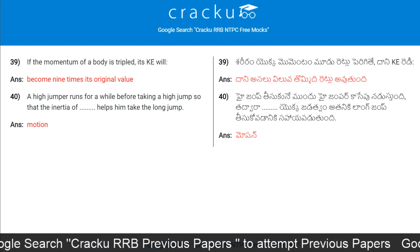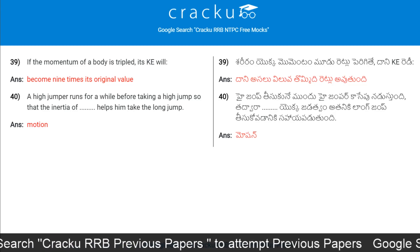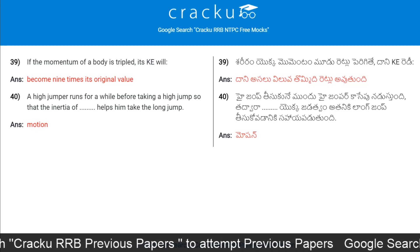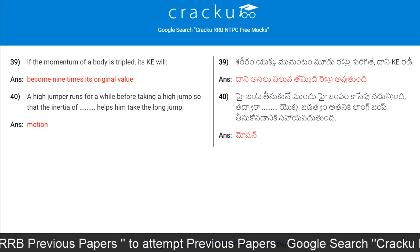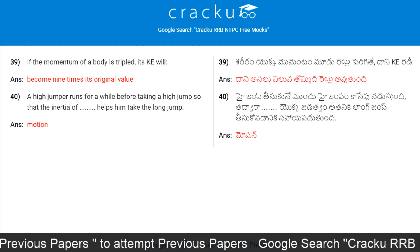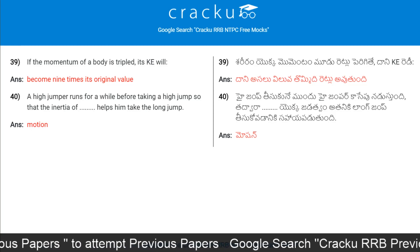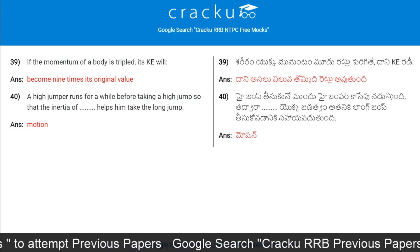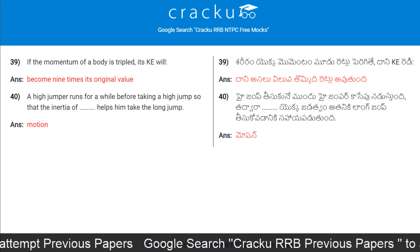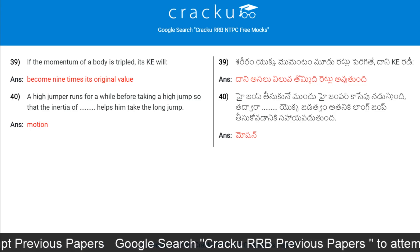A high jumper runs for a while before taking a high jump so that the inertia of motion helps him take the jump. The answer is inertia of motion.